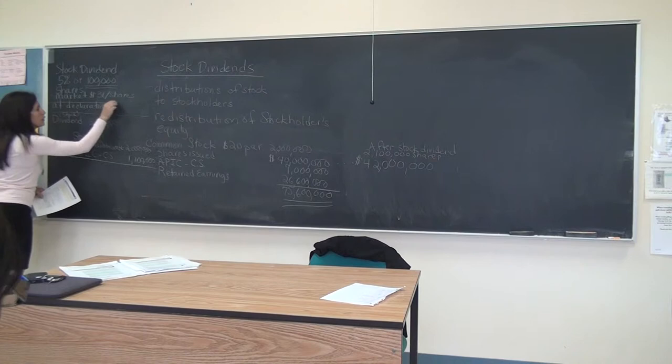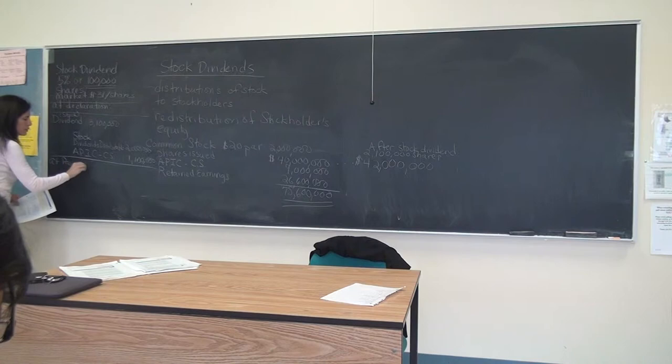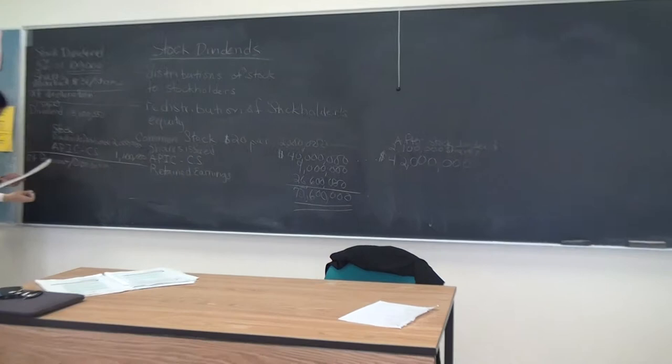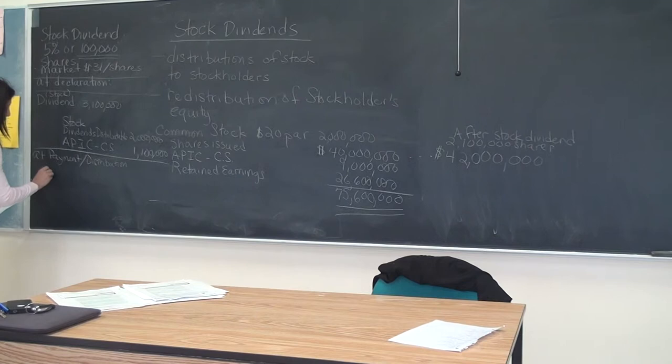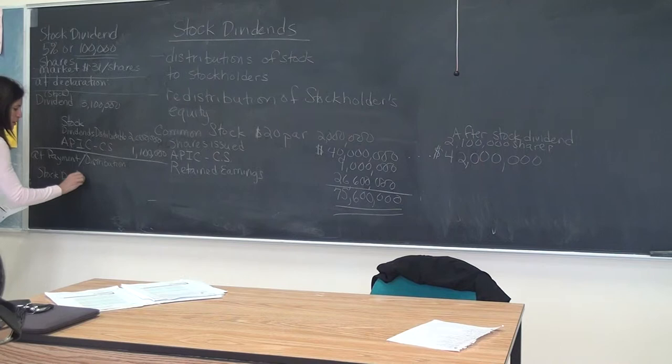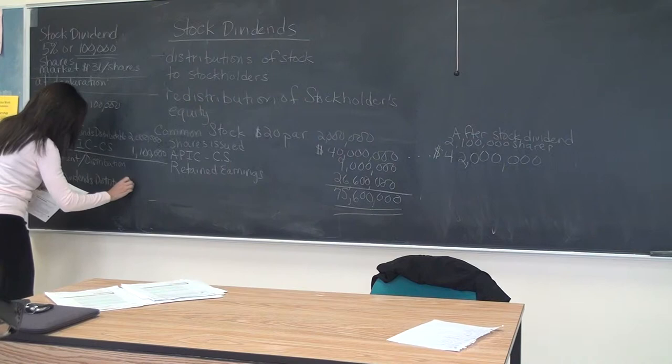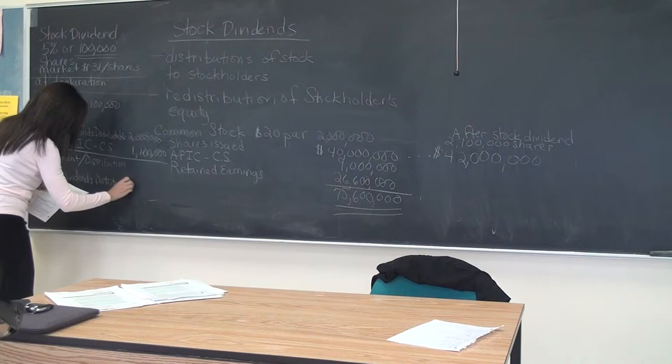When the dividend is actually paid or distributed, the entry looks like this: debit stock dividends payable — or distributable, same thing — $2,000,000; credit common stock $2,000,000.